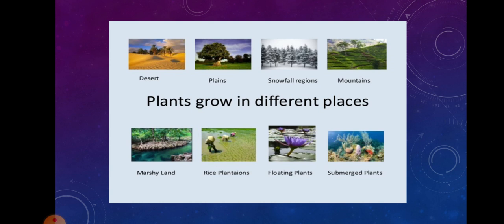So plants that grow in water are called water plants or aquatic plants. Examples: water lily, lotus, and water hyacinths. These are some examples of aquatic plants.